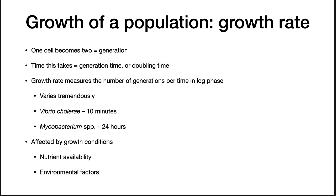The generation time is a distinctive trait of each species and can vary tremendously. For example, Vibrio cholerae has a generation time of 10 minutes, while Mycobacterium species take 24 hours to go through one generation. Other factors can also influence growth rates — if there is a limiting nutrient, it will slow the growth rate. Also, if a microorganism is outside its optimal environmental conditions, for example the wrong temperature or pH, generation times will be longer.